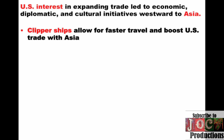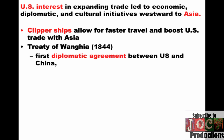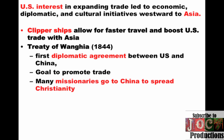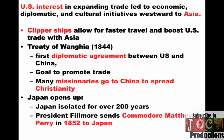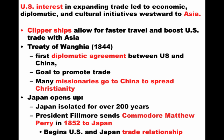Clipper ships allowed for faster travel and a boost to U.S. trade with Asia. A treaty in 1844 was the first diplomatic agreement between the U.S. and China, aimed at promoting trade between the two nations. As a result, many Christian missionaries from the United States went to China trying to spread Christianity. Japan, which had been isolated for over 200 years, was also seen as a place for economic relations — President Fillmore sent Commodore Matthew Perry in 1852 to Japan to open up relations between the two nations.